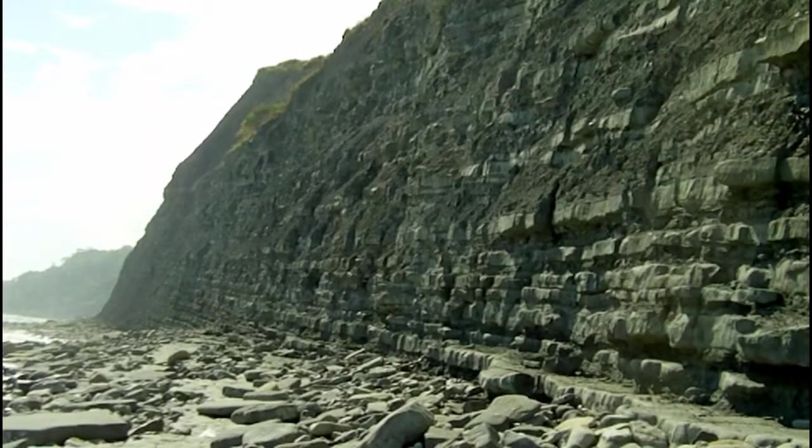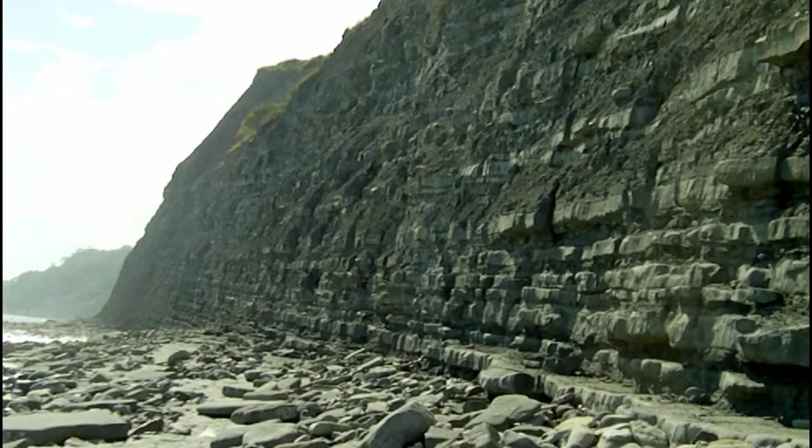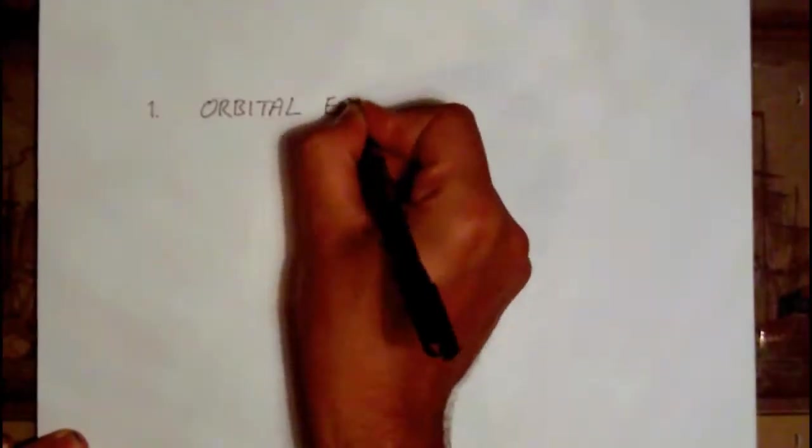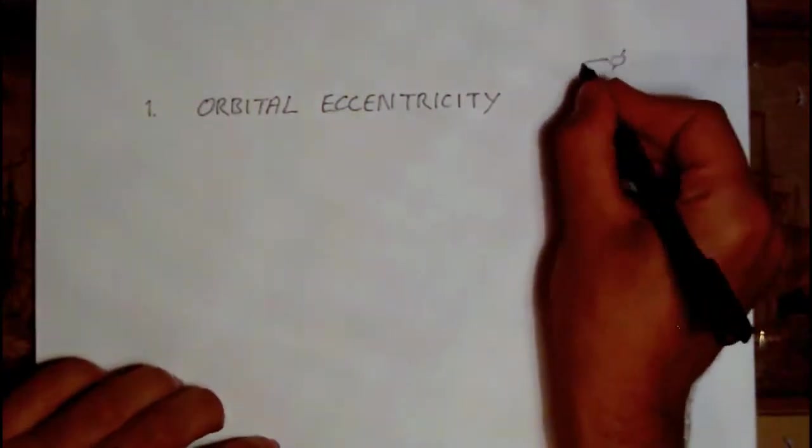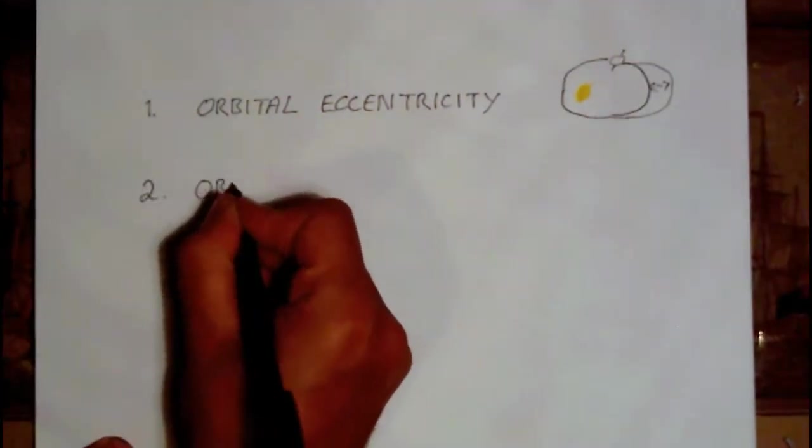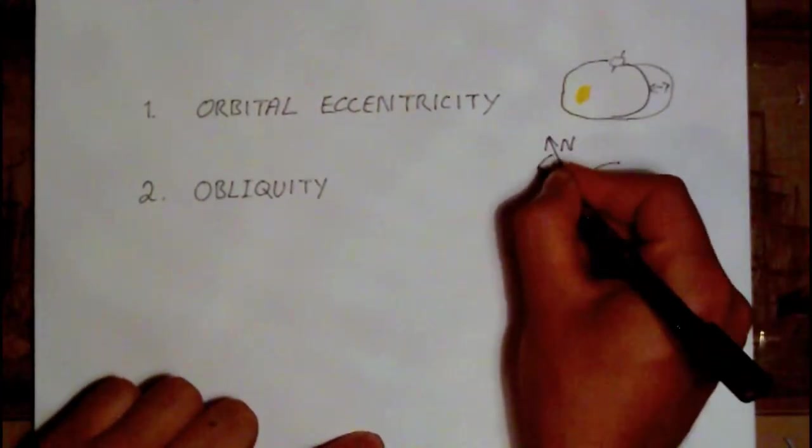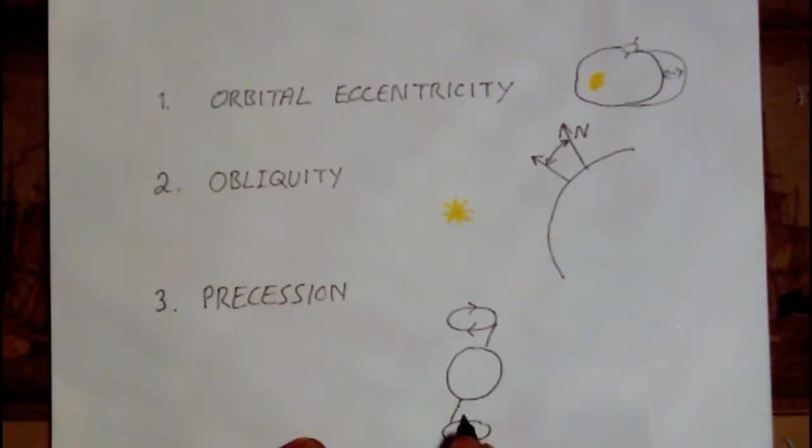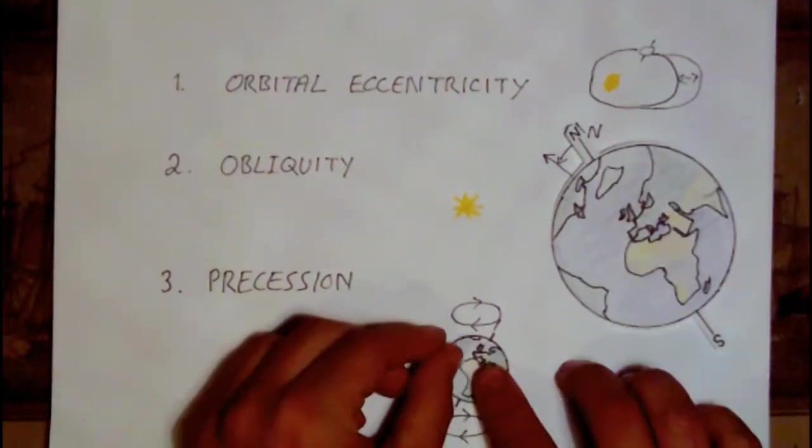These alternating layers of rock represent the effects of cyclic changes in the Earth's climate, brought about by a series of changes in the Earth's orbit around the Sun. These orbital changes are known as Milankovitch cycles and the three main players are orbital eccentricity, orbital obliquity, and precession of the equinoxes.